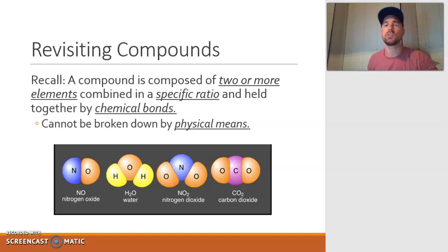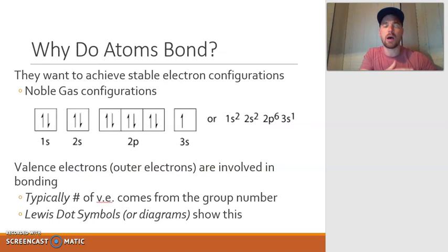In other words, if we were taking a look at any of these compounds shown below, you couldn't separate the elements based on physical means, such as filtration or evaporation. Instead, it would take a chemical reaction to do that. Now the bonds that hold these atoms together are the bonds that categorize what type of compound we're looking at, whether it might be ionic or covalent.